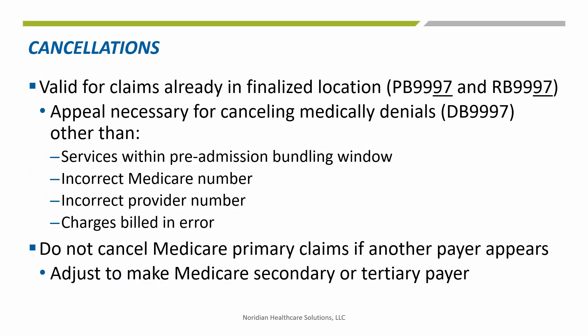Claim cancels are limited to finalized claims with a status location code P, paid or fully processed, or are rejected. They contain the TEL number 97 and should not be submitted until the original claims have appeared on the remittance device. If a claim has a status location code D, the claim has been medically denied and any potential changes may have to be made through the redetermination process.